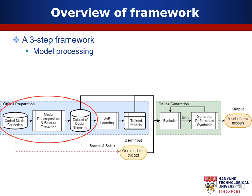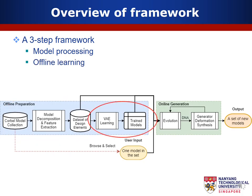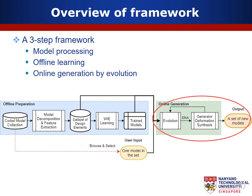Our three-step framework consists of model processing, offline learning, and online generation as illustrated in this figure. First, at the very beginning, we collect cobalt models designed by professionals. After model decomposition and feature extraction, we carefully construct high-level representations for cobalt models. During offline learning, we designed two variational autoencoder models for learning features of models. In the online generation stage, we designed a generation algorithm involving evolution principle and feature-driven deformation for generating new cobalt models.